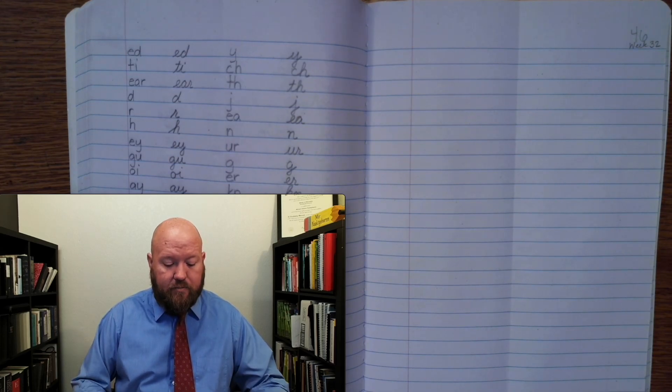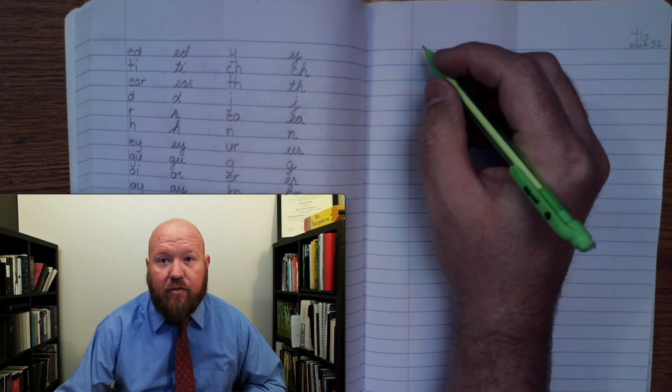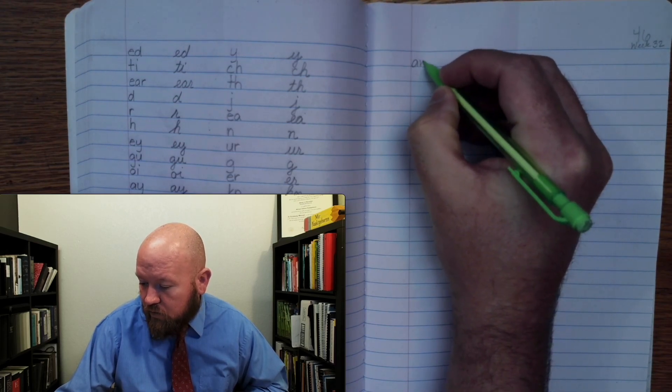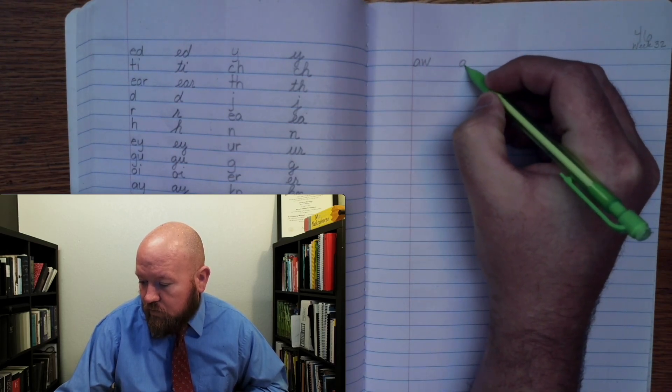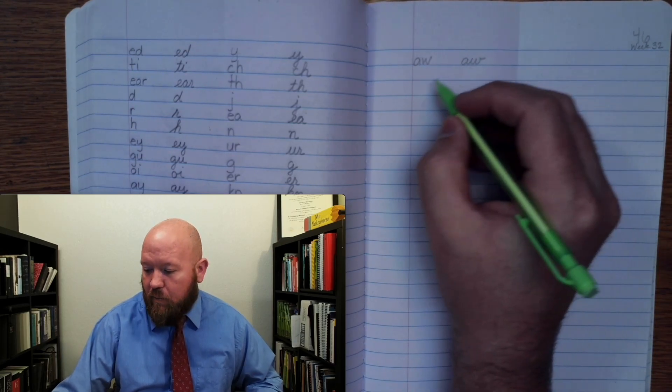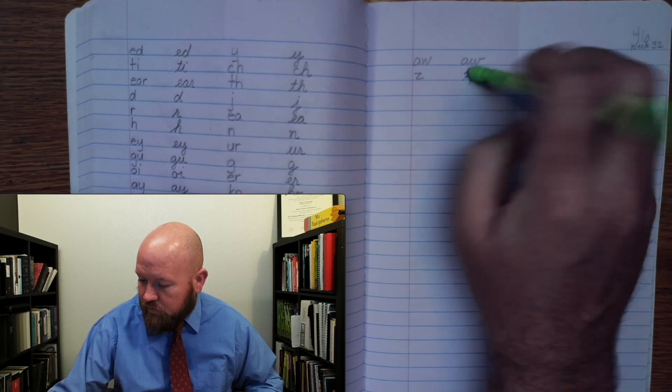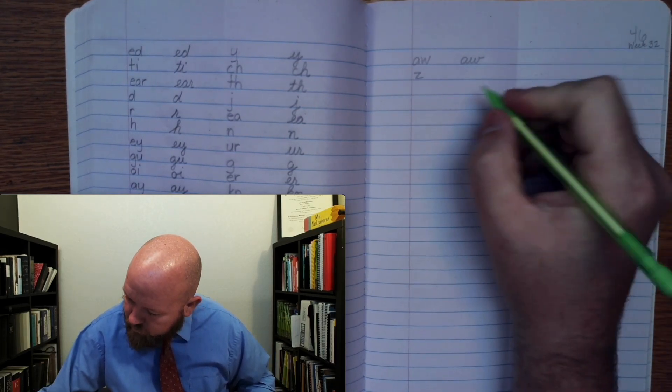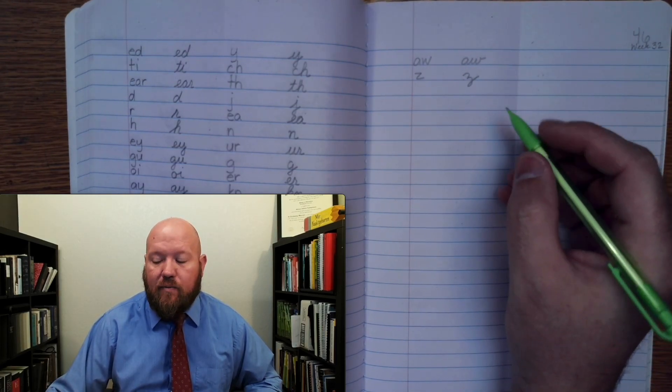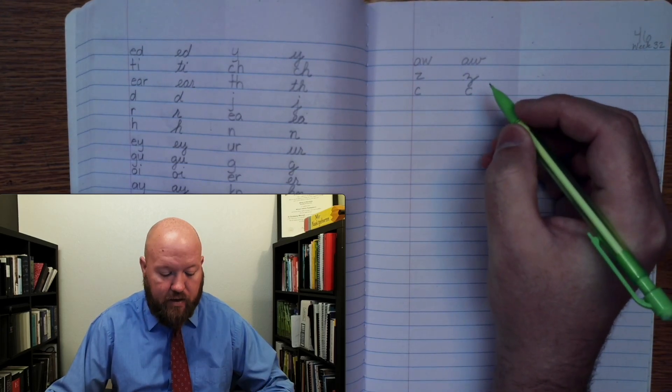The first one. Ah. Ah. I'll write it in manuscript for first and second, in cursive for third through fifth. Ah. Ah. Next one. Z. Z. Next one. K, T. K, T.